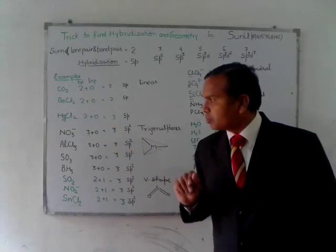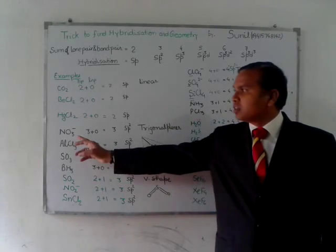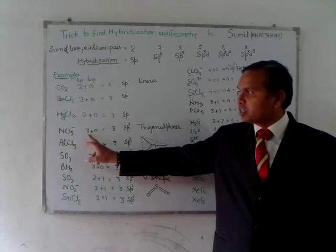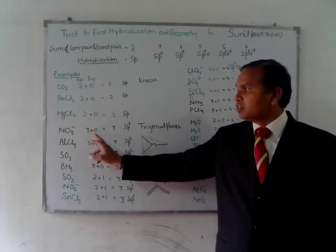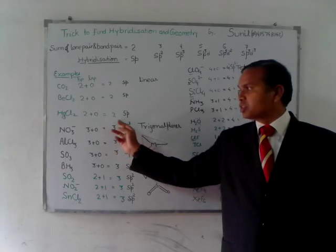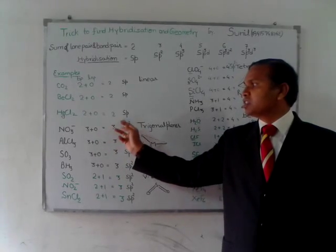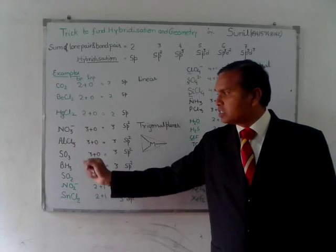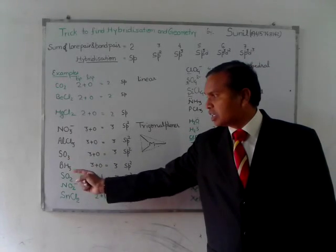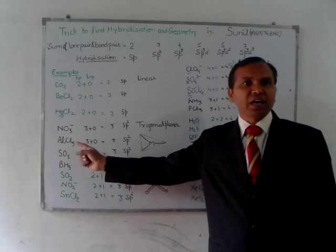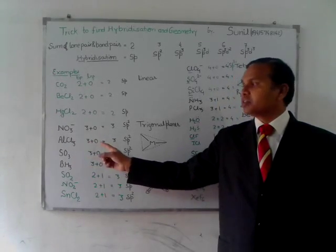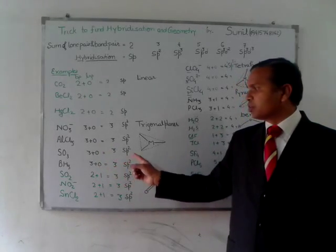Then for NO3 minus, here three bond pair electrons and we don't have any lone pair of electron, so total sum is 3 and it is sp2 hybridized. For AlCl3, SO3, and BF3, all these molecules have three bond pair electrons, so each is sp2 hybridized with trigonal planar symmetry.